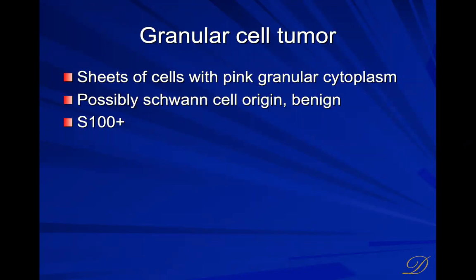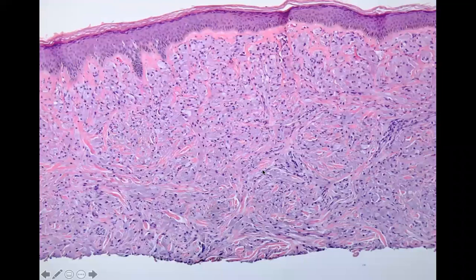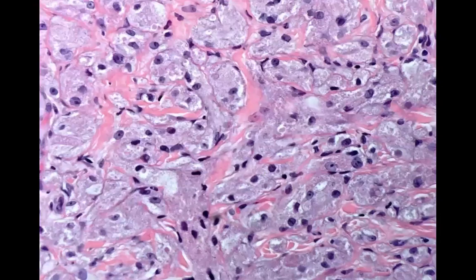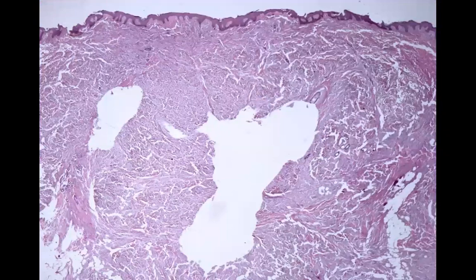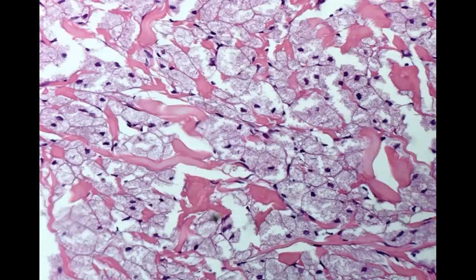A granular cell tumor belongs in the neural chapter because they may be of Schwann cell origin and are S100 positive. You get round cells in the dermis or subcutis with red granular cytoplasm. Granular cytoplasm is finer than foamy, where you see individual little circle balls, and coarser than ground glass, which is like fine Caribbean sand.